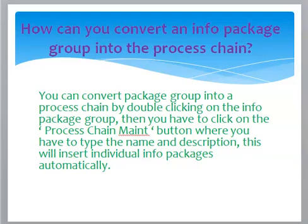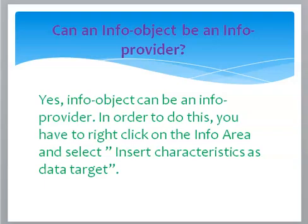How can you convert an info package group into a process chain? You can convert an info package group into a process chain by double-clicking on the info package group, then clicking on the process chain main button where you type the name and description. This will insert individual info packages automatically.